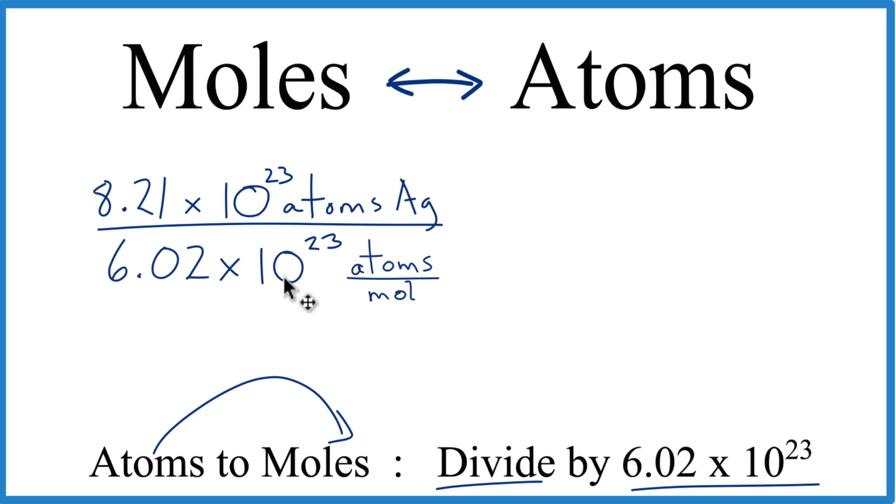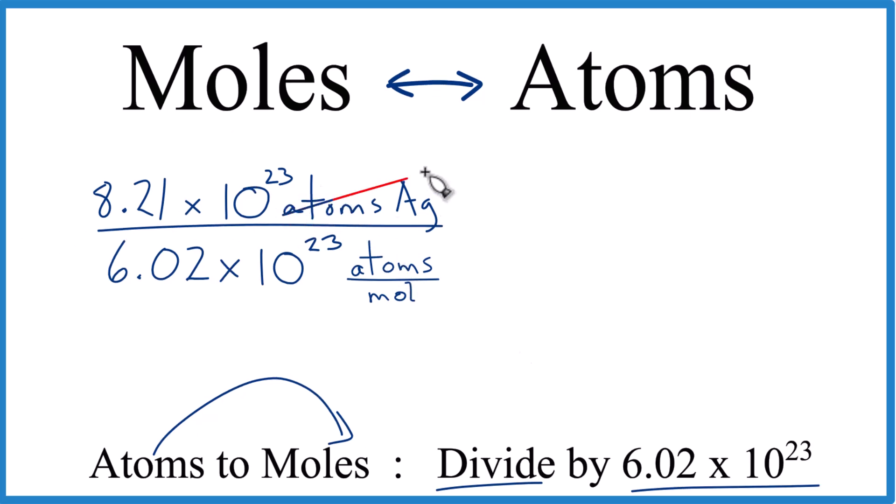And again, remember, that's 6.02 times 10 to the 23rd atoms per mole. That's our conversion factor there. We have atoms on top here and atoms on the bottom. That leaves us moles. Really, it's 1 over 1 over moles. That's just moles. So now divide 8.21 by 6.02.